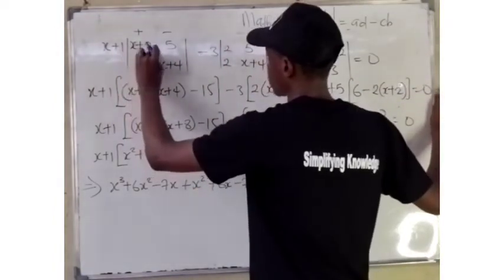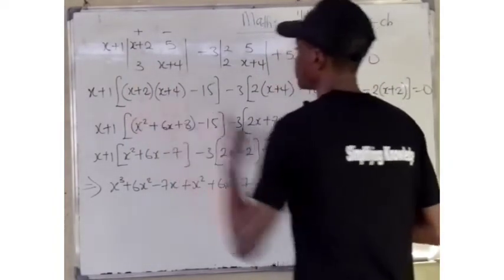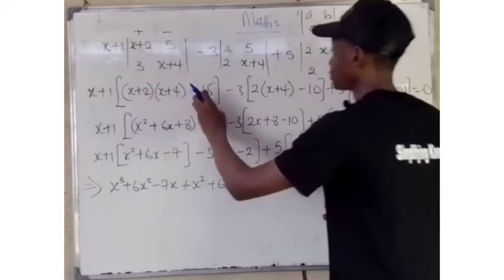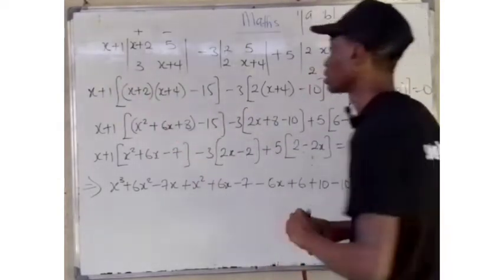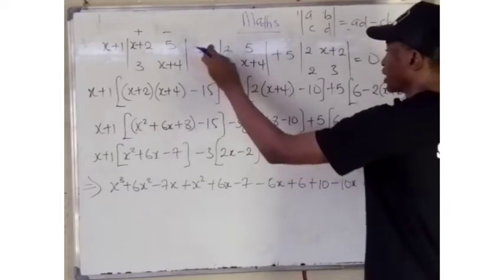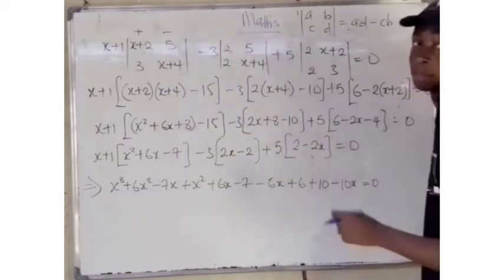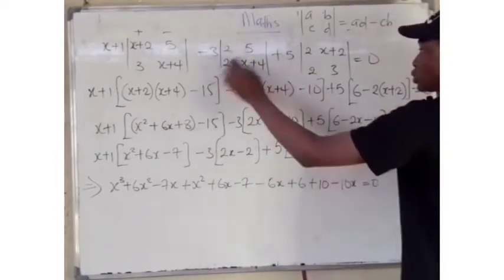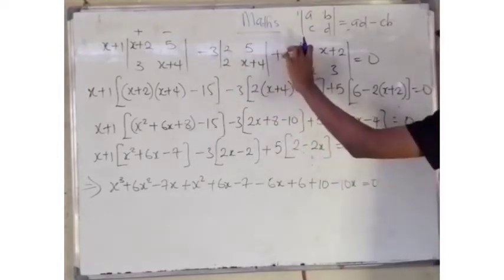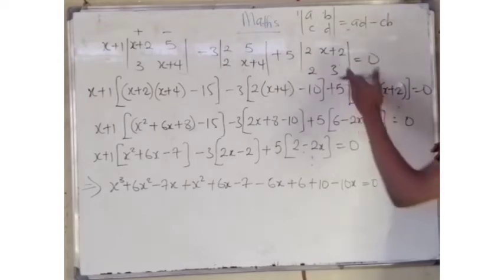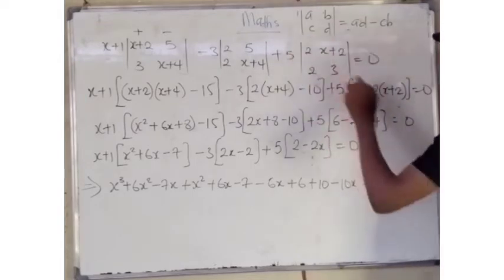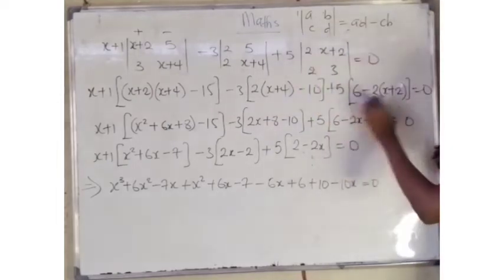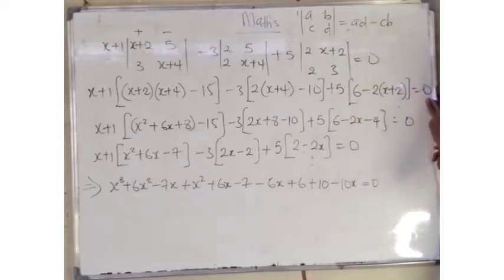So we are going to have x plus 2 multiplied by x plus 4, minus 3 times 5, which gives us 15. All of this multiplies x plus 1. Then, minus 3 into the determinant of its minor: 2 times x plus 4, that is 2 into x plus 4, minus 2 times 5, which is 10. Then plus 5 into: 2 times 3, which is 6, minus 2 times x plus 2. So we have 6 minus 2 into x plus 2. Everything is equal to 0.